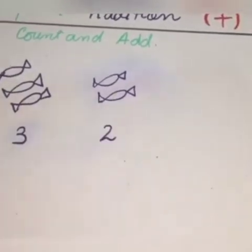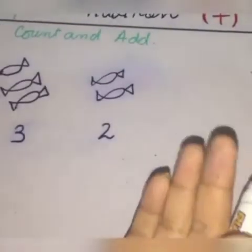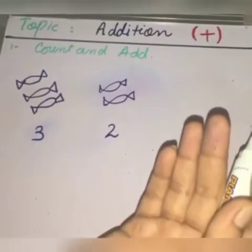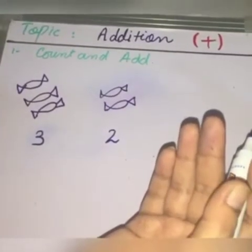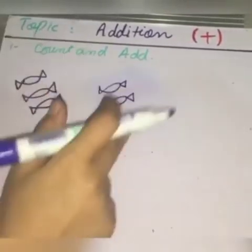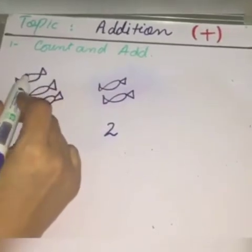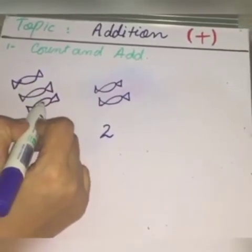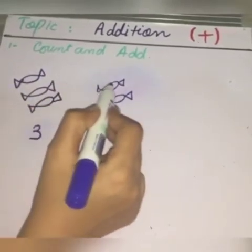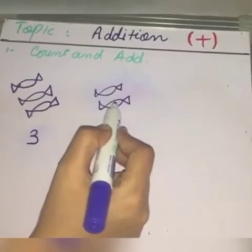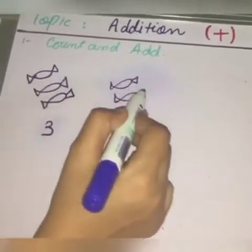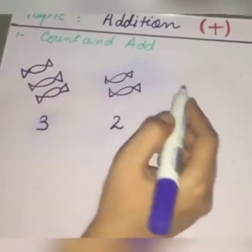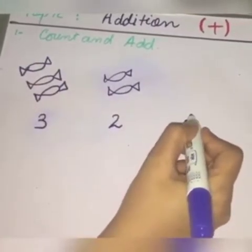Two more toffees. Now tell me, how many toffees does Sarah have altogether? Let's count all of them — one, two, three, four, five. So how many toffees does she have altogether? She has five toffees.